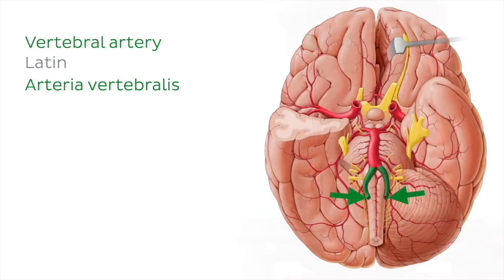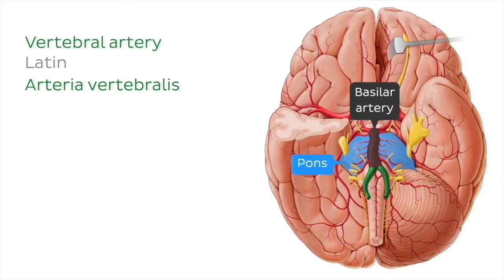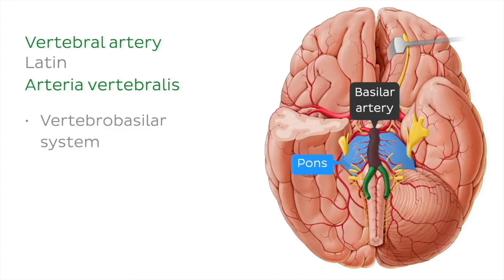They enter the skull and once at the level of the pons, they merge with each other to form the single midline basilar artery, which we can see here in this image of the brain from an inferior view. The basilar artery then ascends along the ventral surface of the pons. This vertebrobasilar system gives origin to the other arterial circuit delivering blood to the brain — the posterior circulation of the brain.